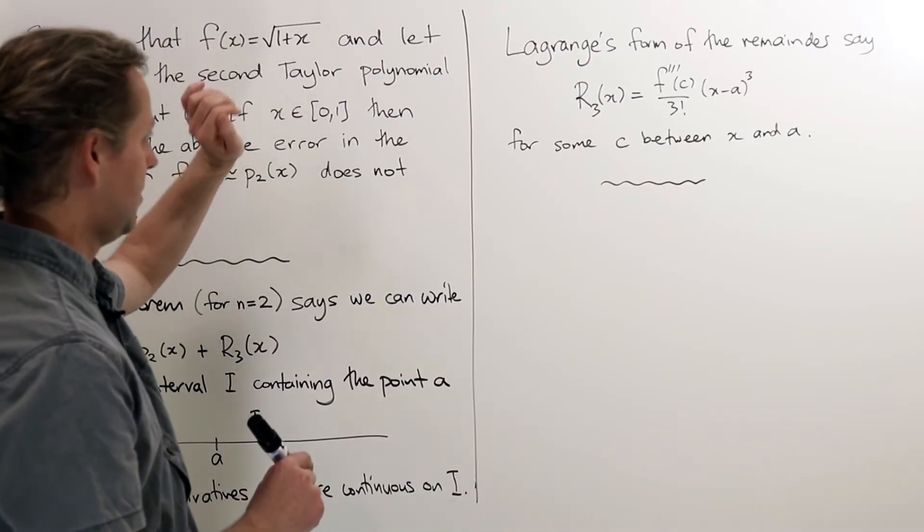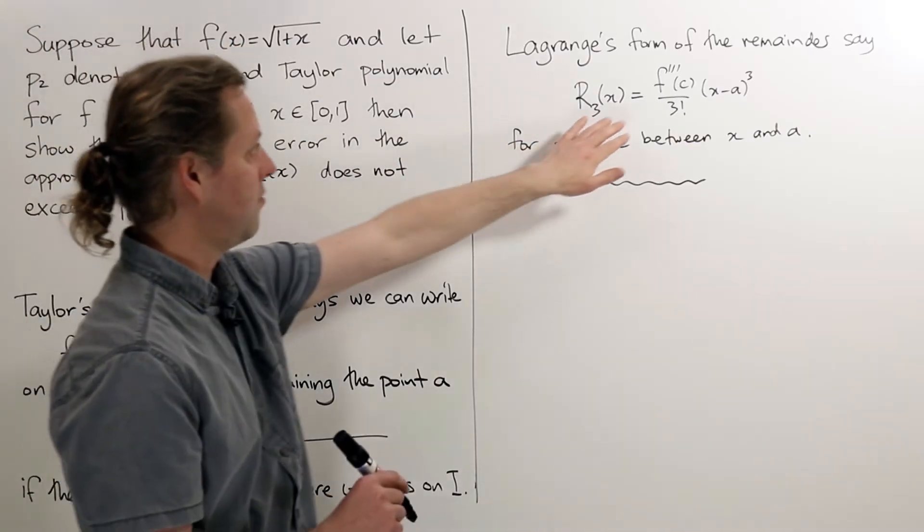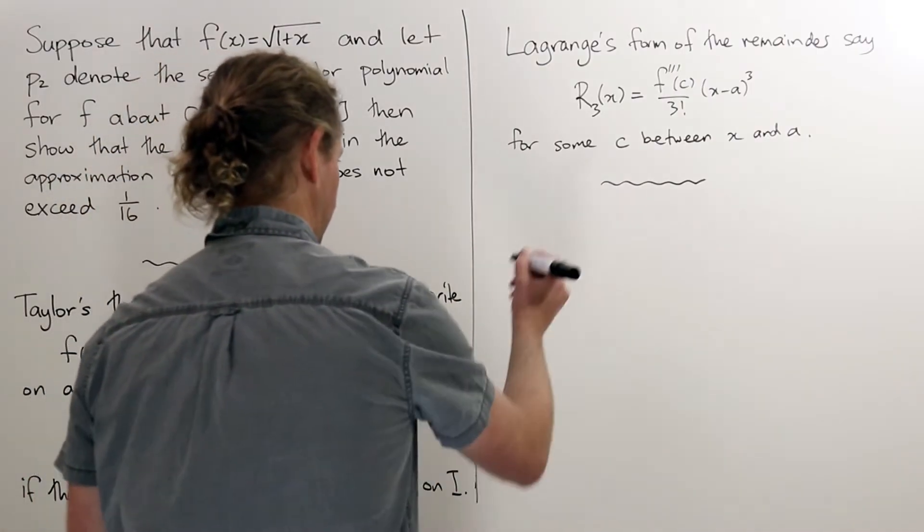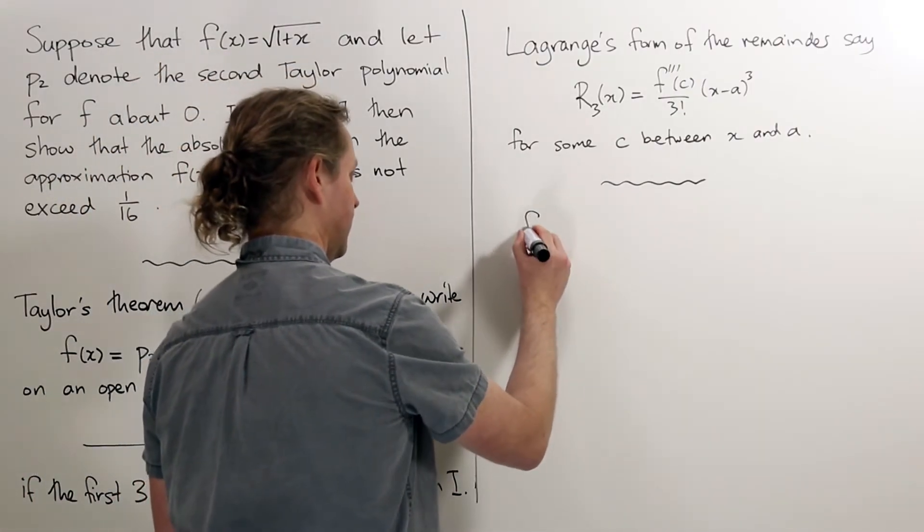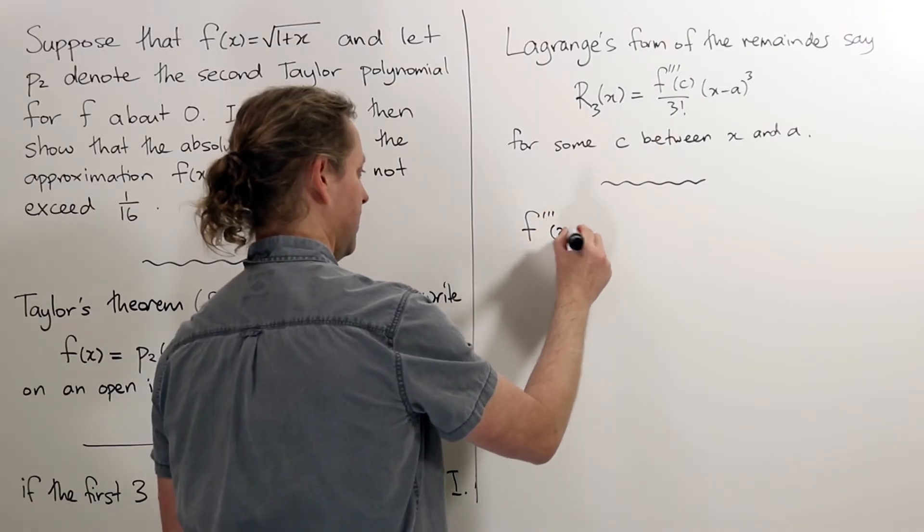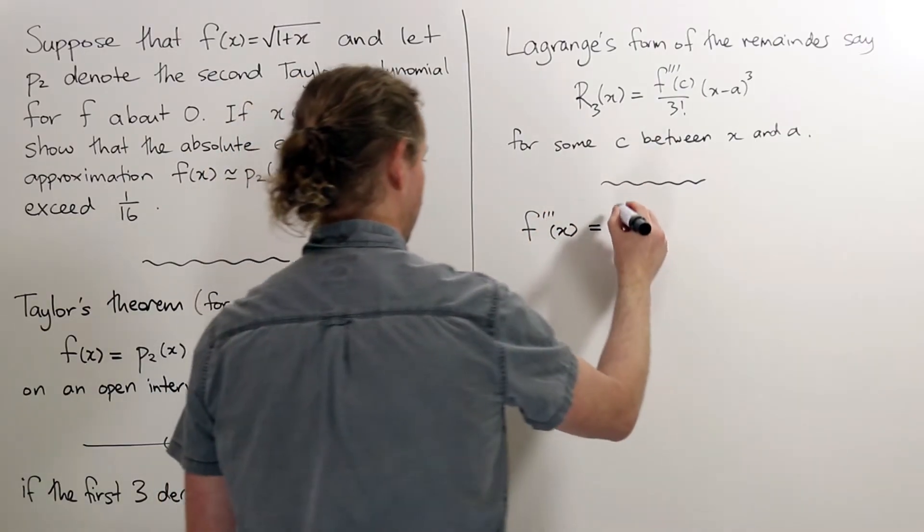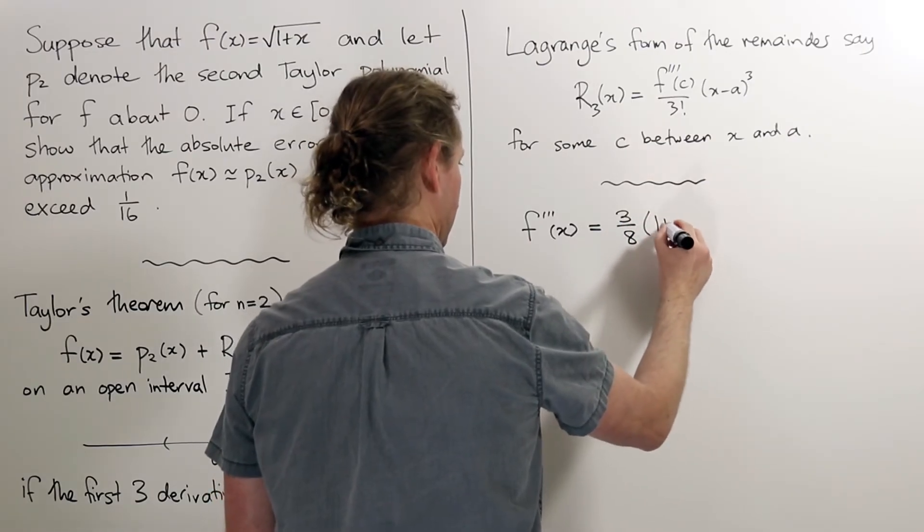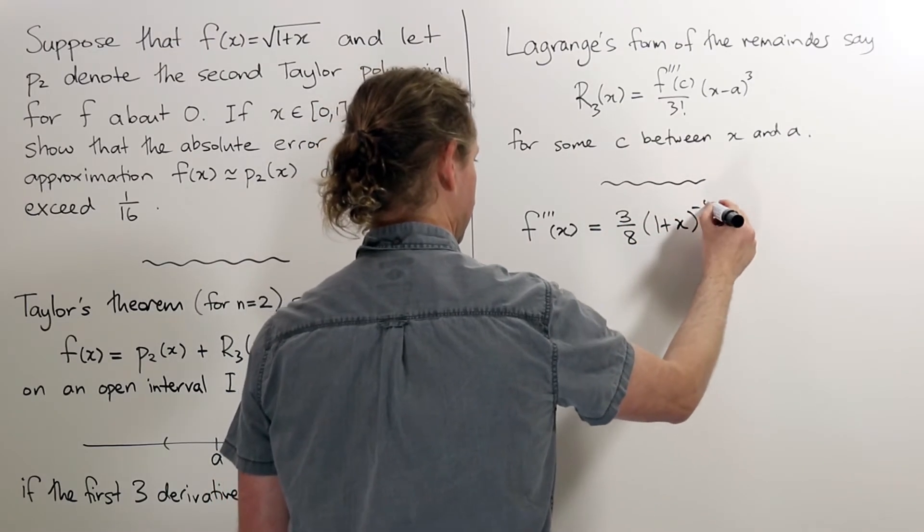We've got our function f(x) is the square root of 1 plus x, and we can see that in the remainder we're going to need the third derivative. So I have calculated that already, so I'll just tell you what that is. f'''(x) is 3/8 times (1 plus x) to the minus 5/2.